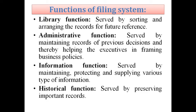The filing system basically serves four functions. First, the library function, which is served by sorting and arranging records for future reference. Second, the administrative function, which is served by maintaining records of previous decisions, thereby helping executives in framing business policies. For example, discussions that took place in a meeting are recorded in proceedings kept in a file, helping executives in future meetings on the same topic.